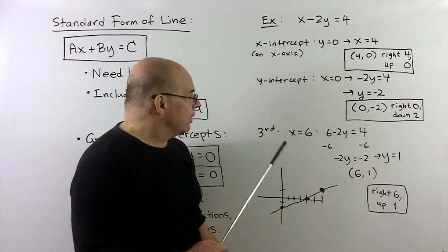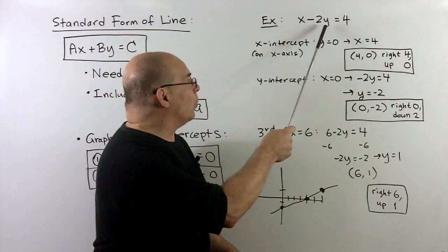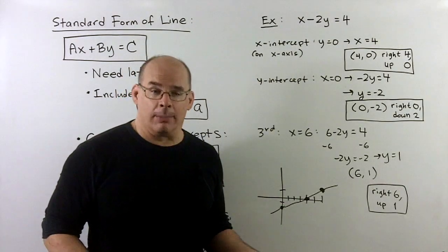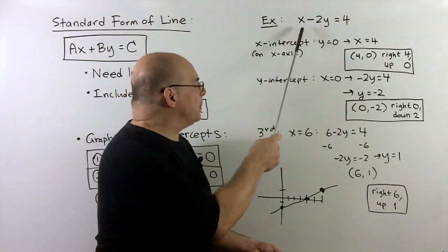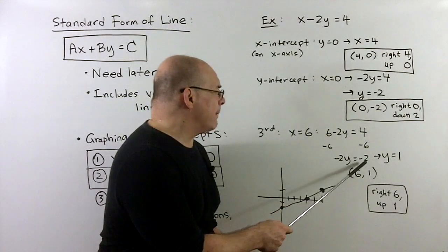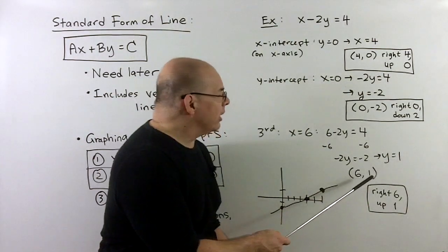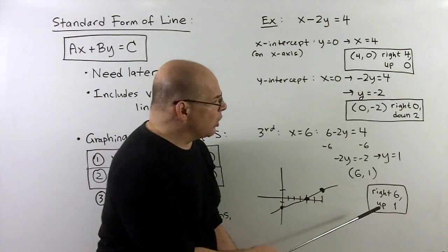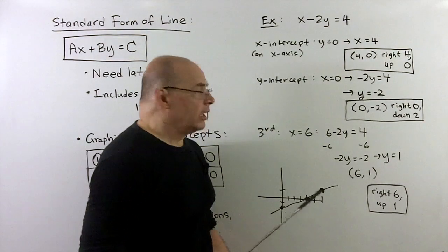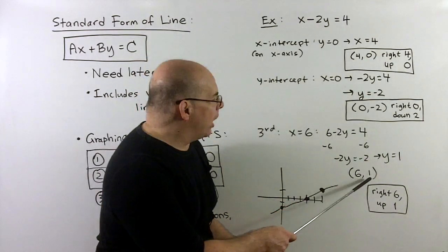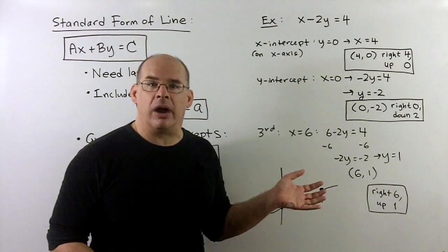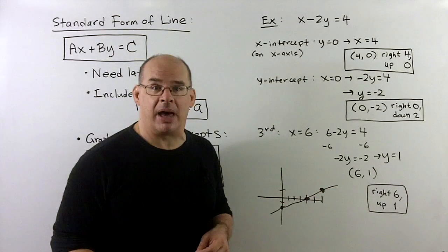To check the work with a third point, I could let x equal 6. That gives minus 2y equals minus 2, so y equals 1, giving the point (6, 1) — right 6, up 1. That's on the line, confirming our work. Note: I could have started with y equal to 1 directly and gotten x equal to 6 immediately — a little bit of art, and sometimes you get a cleaner answer by thinking harder.